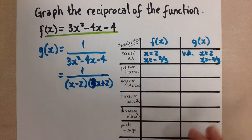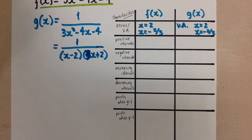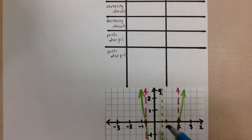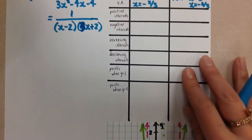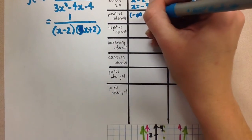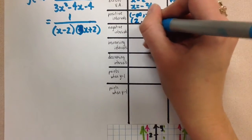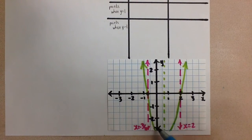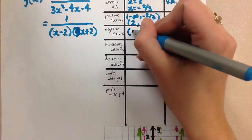Let's continue with the rest of our chart. We're looking at the intervals where the graph is positive — that means when is the graph above the x-axis. Looking at the parabola, it is above the x-axis from negative infinity to negative 2 over 3, and then above the x-axis again from 2 to positive infinity. The interval where the original graph is negative is when it's below the x-axis, and that happens between negative 2 over 3 and positive 2.